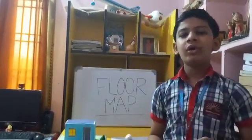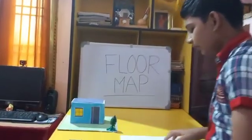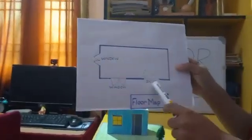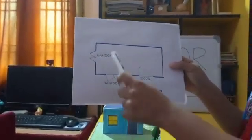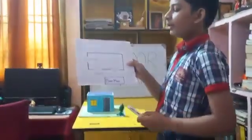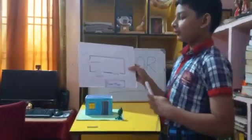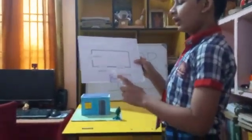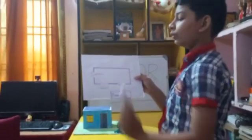Floor map is a 2D outline of a house or a building from above. This is the floor map made by me of this house. It has one door and two windows. Architects use the floor map for designing a house. We can see the position of the door and two windows.